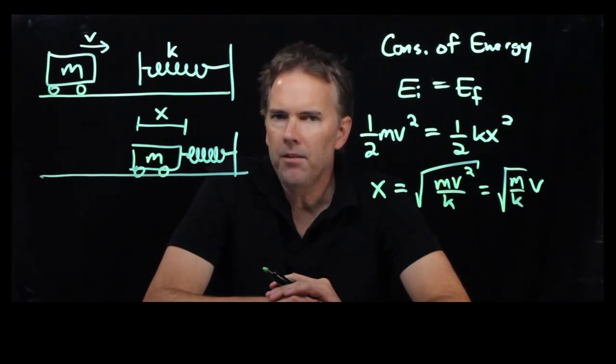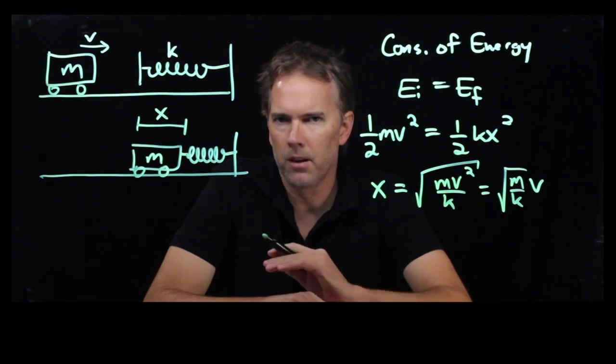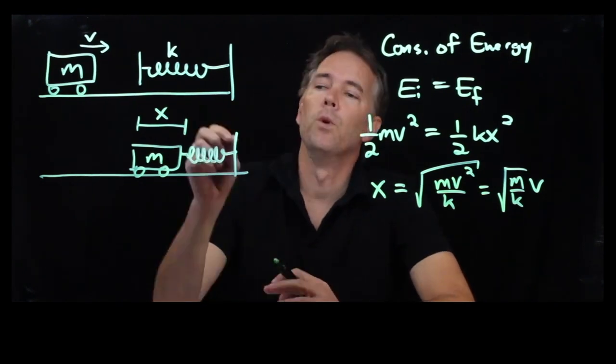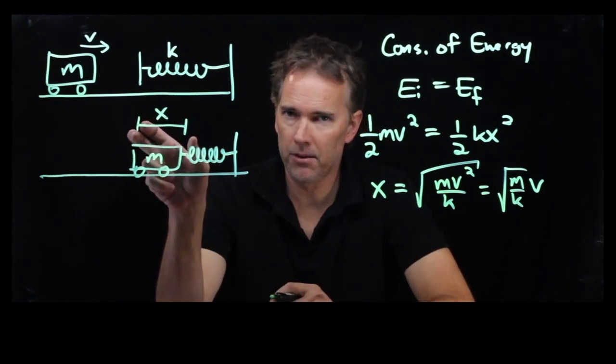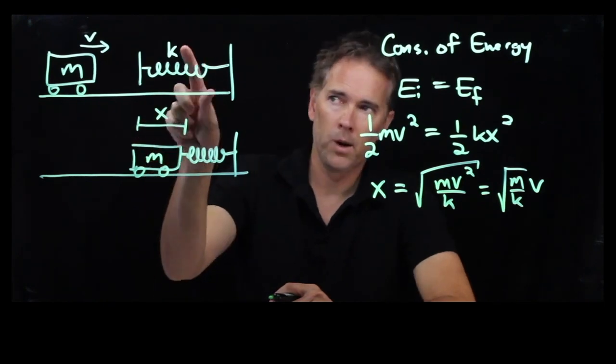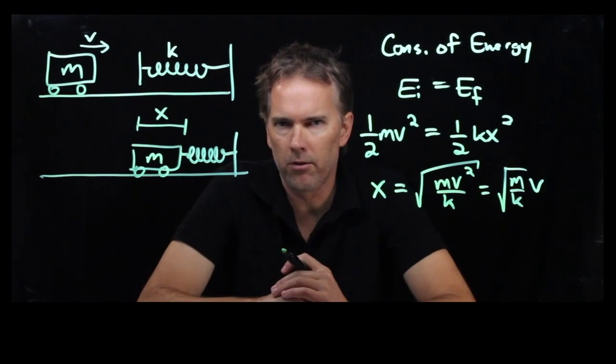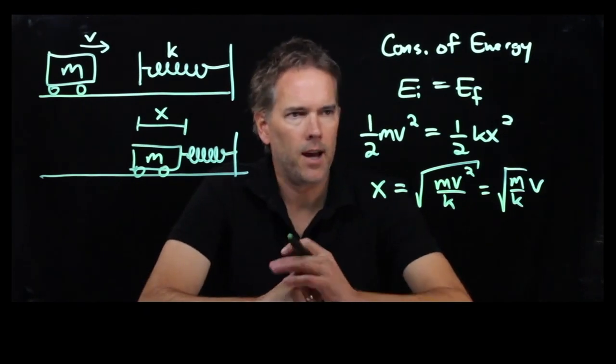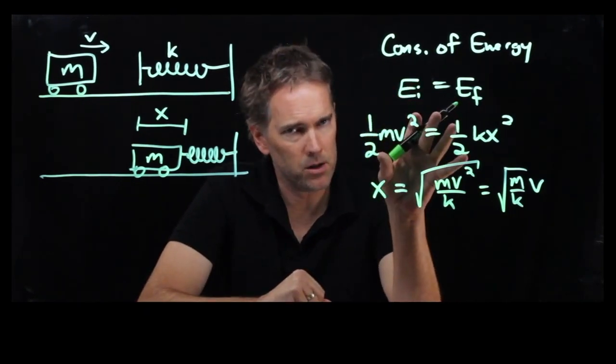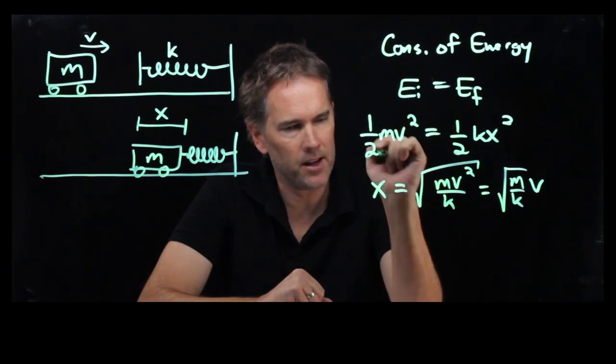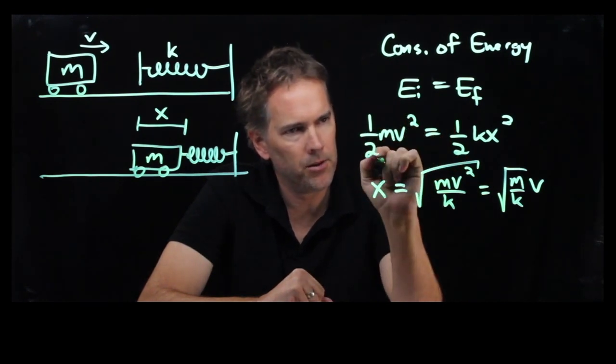Now let's say you were given different parameters in the problem. Let's say we told you how far that spring gets compressed, what kind of spring it was, and the mass, and you had to solve for v. How would you do that? It's the exact same equation. All you have to do is solve it for v instead of for x.